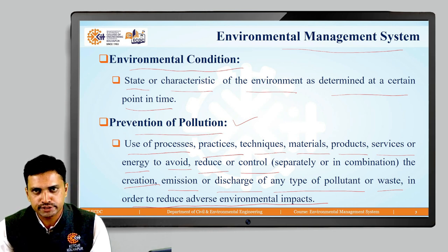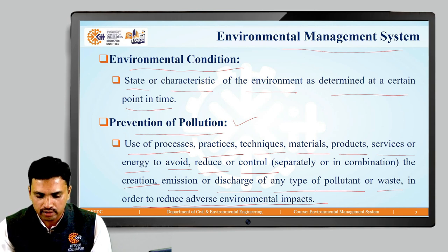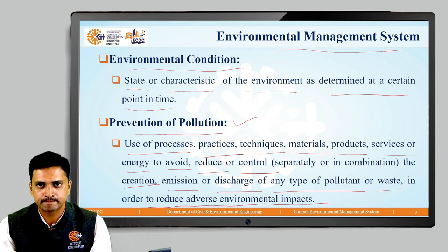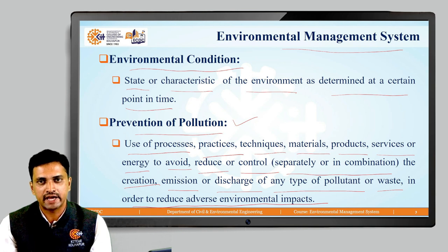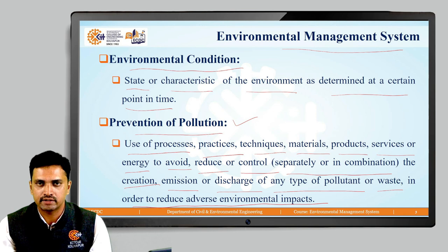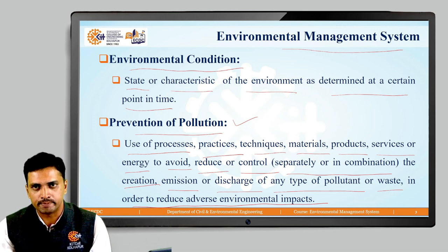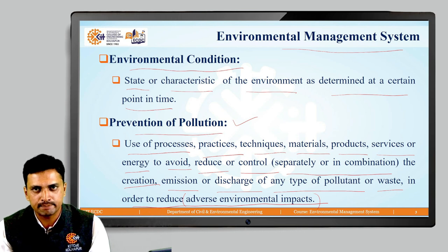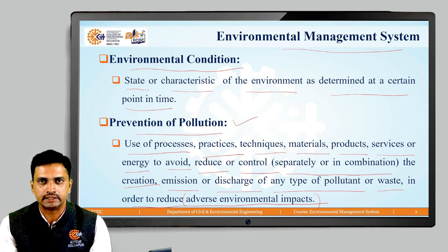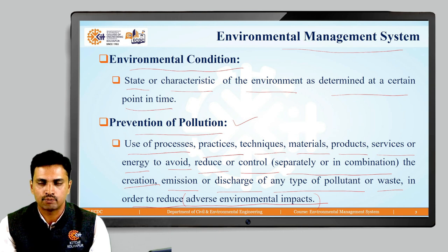A lot of approaches can be used for reduction of adverse environmental impacts. These approaches can be used separately at different locations or different functions of the organization, or they can be used in combination. The ultimate aim of prevention of pollution is to reduce adverse environmental impacts and to enhance situations where we can increase positive impacts to the environment.